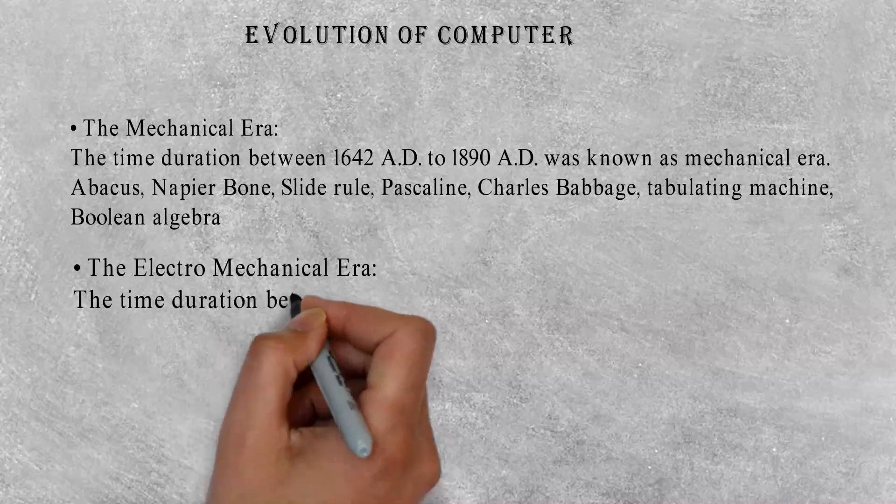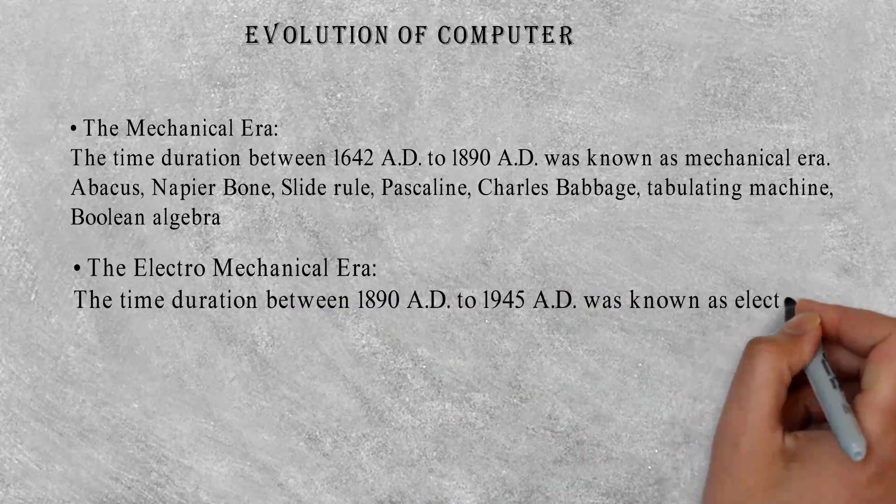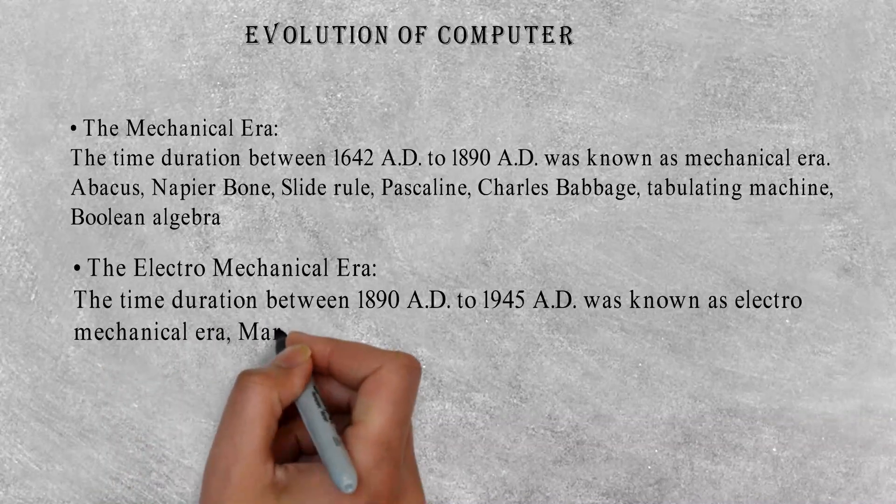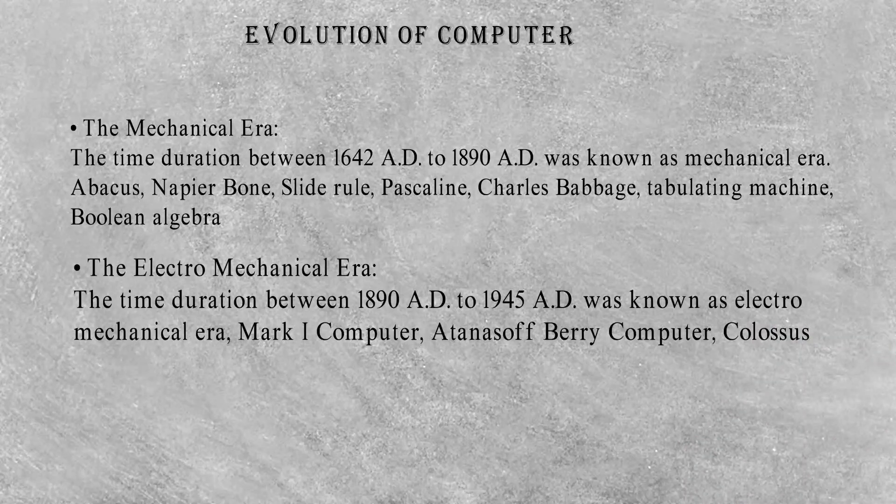The Electromechanical Era: The time duration between 1890 AD to 1945 AD was known as Electromechanical Era. Examples include Mark I Computer, Atanasoff-Berry Computer, and Colossus.